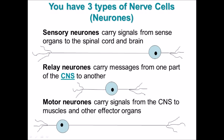The second type is a relay neuron, which carries messages from one bit of your central nervous system to another. This is usually shown in diagrams on a spinal cord.